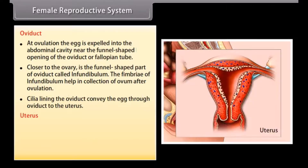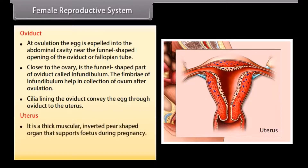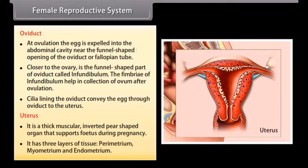The uterus is a thick muscular, inverted pear-shaped organ that supports the fetus during pregnancy. It has three layers of tissue: the perimetrium (outer layer), the myometrium (middle muscular layer), and the endometrium (inner lining).